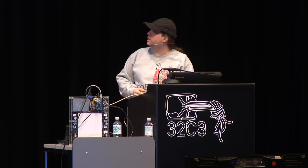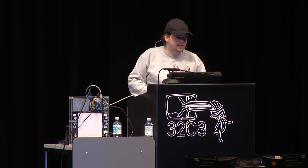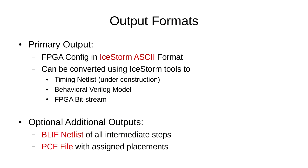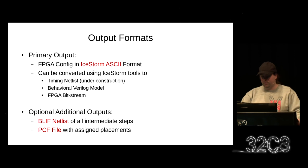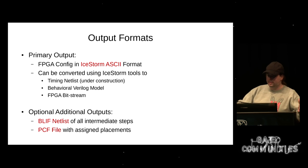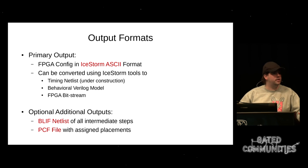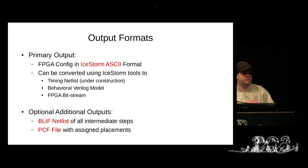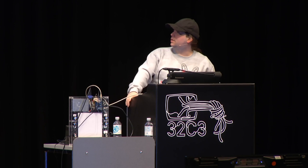The output format of Arachne-PNR is IceStorm ASCII files which can be converted using the low-level IceStorm tools. You can also create additional outputs like a placement file containing all generated placements, or a BLIF netlist of the packed design. So that's the second part of our flow. Arachne-PNR allows us to take a technology netlist and actually implement it on the chip.